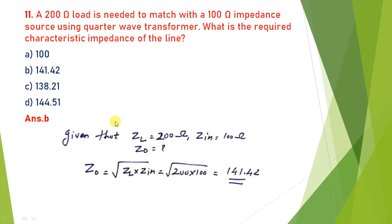Next: a 200 ohm load is to be matched with a 100 ohm impedance source using a quarter wave transformer. What is the characteristic impedance? For a lambda/4 transformer, Zin = Z0² / ZL, so Z0 = √(ZL × Zin) = √(200 × 100) = 141.42 ohm. The answer is (b).